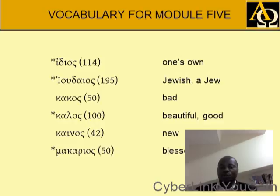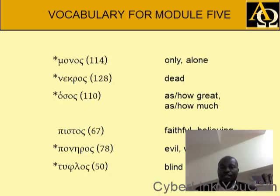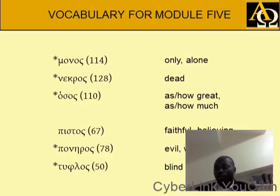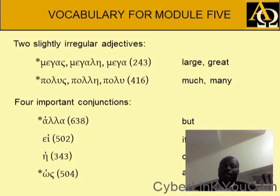Kakos means bad. Kalos means beautiful, good. Kainos means new. Makarios means blessed. Monos means only, one, alone. Nekros means dead. Hosos means as, how much, or how great. Pistos means faithful, believing. Poneros means evil or wicked. Tuphlos means blind. Megas, megale, mega means large, great. Polus, pole, polu means much, many.